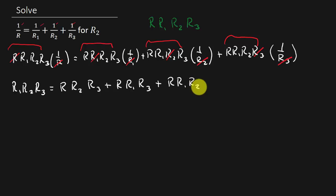Alright, so now what are we doing? Well, we're solving for R2, right? So everything with an R2 has to go to one side. So notice here that this term has an R2 and this term has an R2. So what I'm going to do here is I'm going to subtract R, R2, R3 to both sides, subtract R, R2, R3 to both sides and I'm going to subtract R, R1, R2 to both sides and subtract R, R1, R2 to both sides.